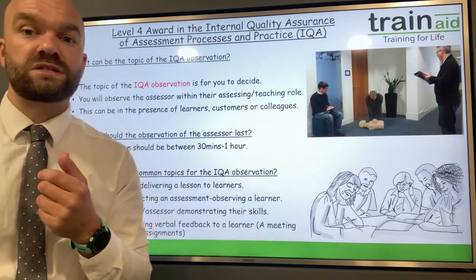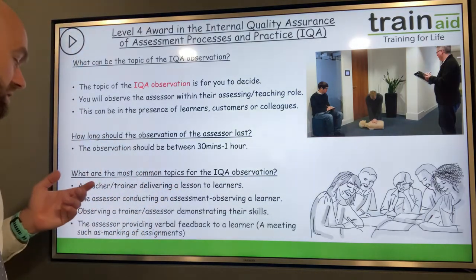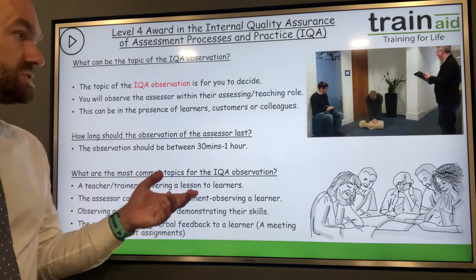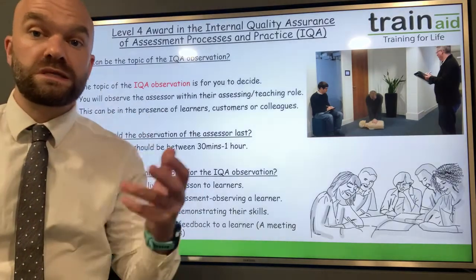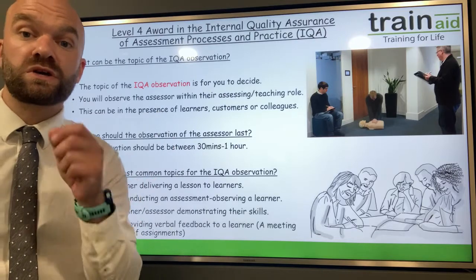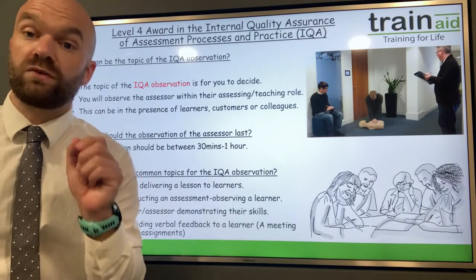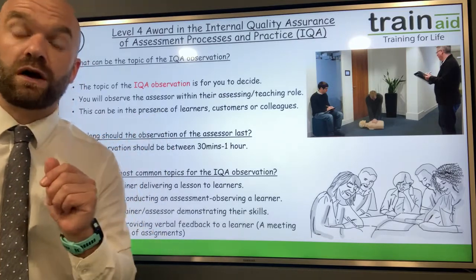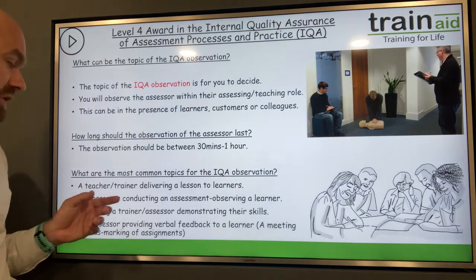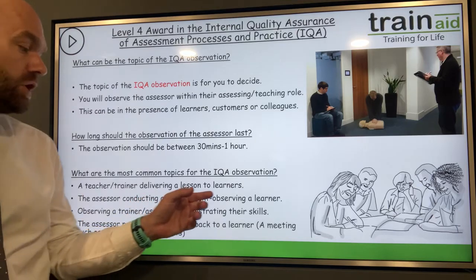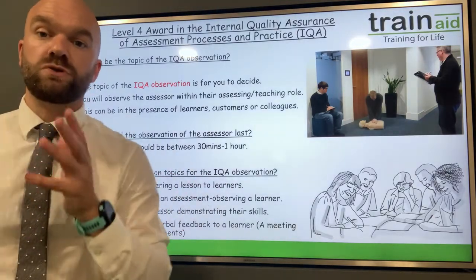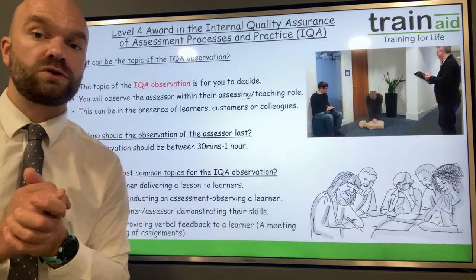One option is seeing them within their assessing role — this could be a teacher, trainer, or assessor delivering a lesson to learners. You could see them in a teaching role, teaching a class of learners, and write up an observation form. You could also observe an assessor conducting a one-to-one assessment with a learner, as opposed to a classroom setting.